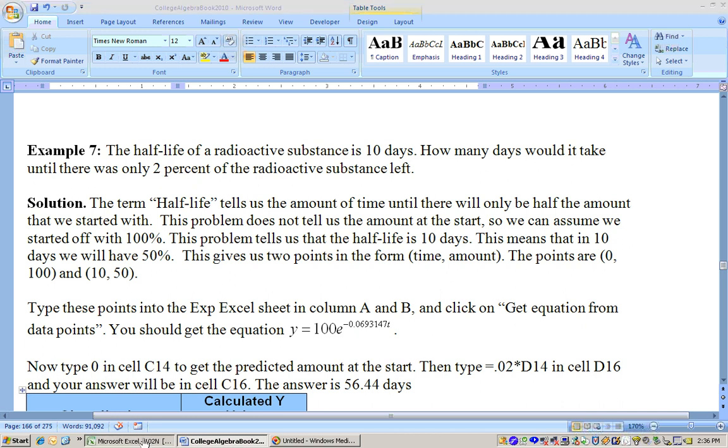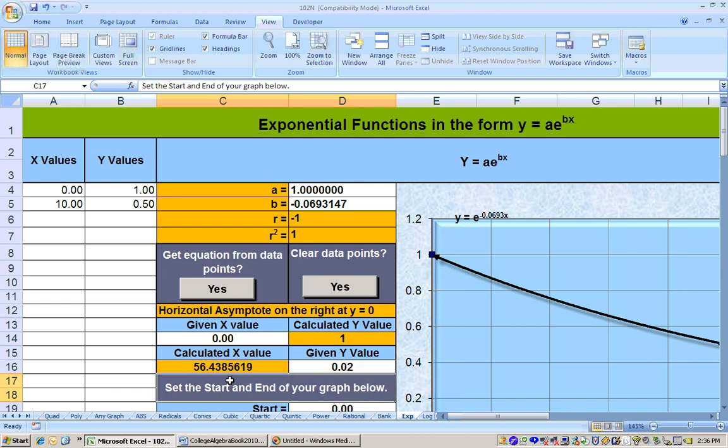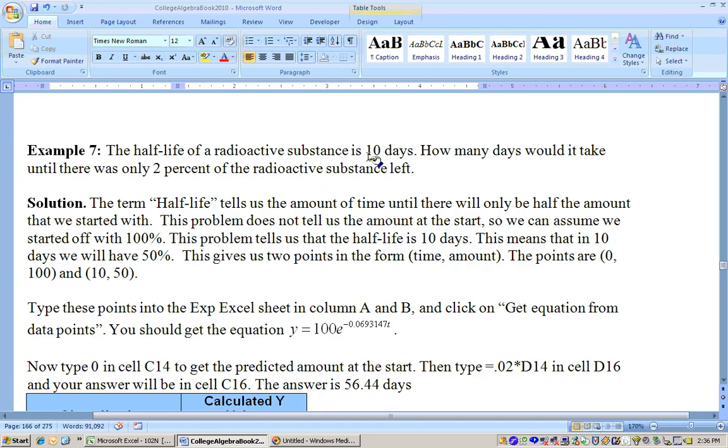That 2 percent is an amount. This is the y value, the 2 percent. Now, if I used 100 here and 50 here, then I would have typed 2 in here for y. But I didn't. I used 1 for 100 percent and 0.5 for 50 percent, so that means I'll have to type in 0.02 here. Before I do that, make sure that I have 0 here. That's going to be 1 right here. And right here, I'm going to type in equals 0.02 times my initial amount, which was 1 in this case. So I hit enter, and here it is. I'm down to 2 percent at about 56 days.